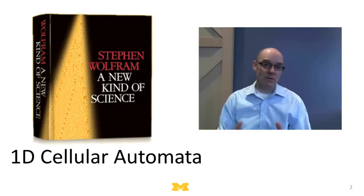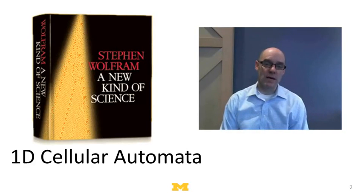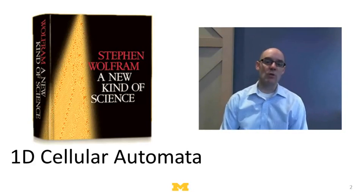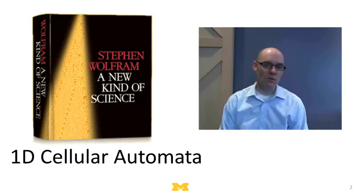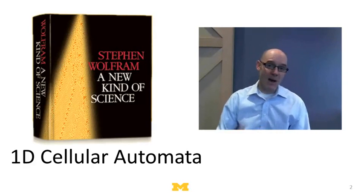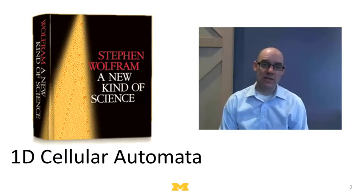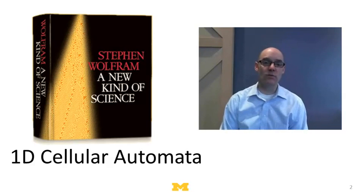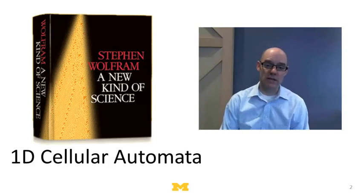These cellular automata have been studied in great detail, including a recent book by Steven Wolfram — the developer of Mathematica — called 'A New Kind of Science.' In this thousand-page book with hundreds of illustrations, Wolfram explores to unbelievable depth how the cellular automata model works. Wolfram refers to this as a new kind of science because he's arguing for a computational, inductive way of looking at the world.